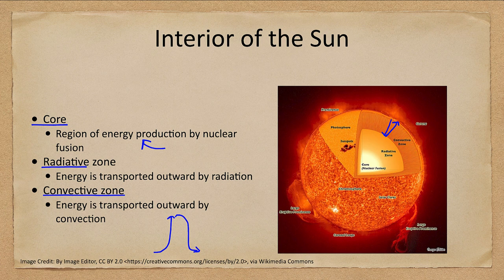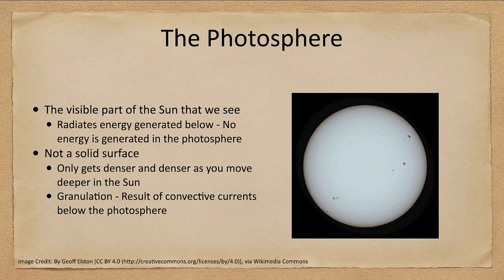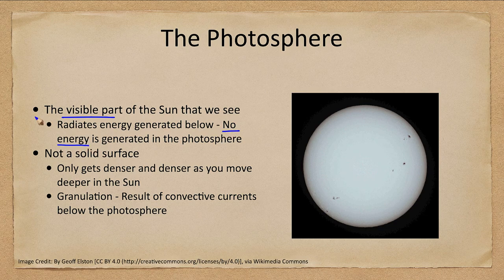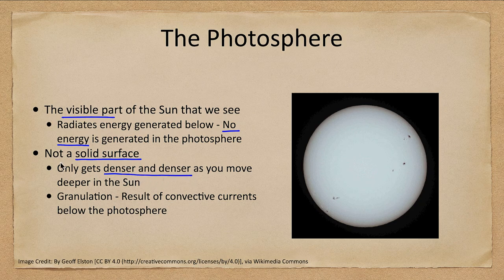When we get out to the outer layers, we have the photosphere. The photosphere is the visible part that we actually see, and it radiates away the energy that was generated. There is no energy being generated in the photosphere — it's not burning in any sense; it is just glowing because of its extremely high temperature. It's also not a solid surface; there is no solid surface to the Sun, just as there was not to the Jovian planets. It only gets denser and denser as you get deeper into the Sun.